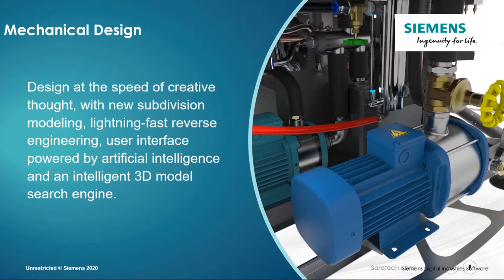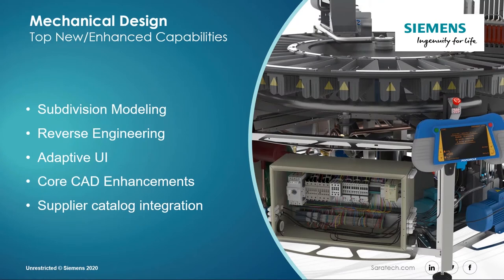Let's begin with mechanical design, the core of what you do. In 2021, we have new subdivision modeling, very fast reverse engineering, artificial intelligence capabilities, and an intelligent 3D model search engine. We'll go through these one by one: first, subdivision modeling, then reverse engineering, adaptive UI, core CAD — the stuff you do daily — and finally, supplier catalog integration.